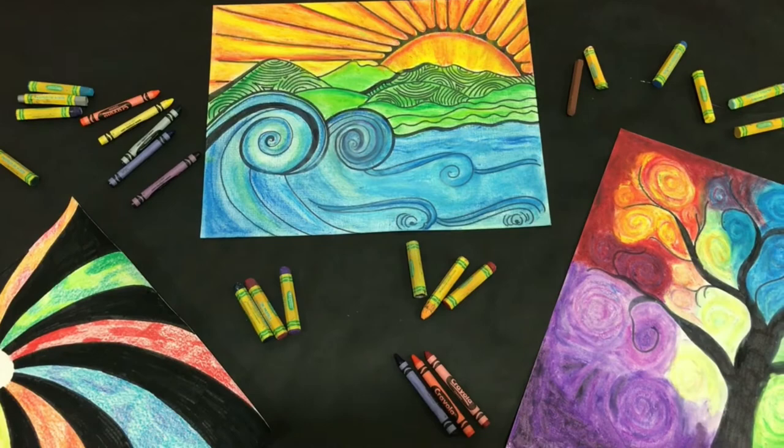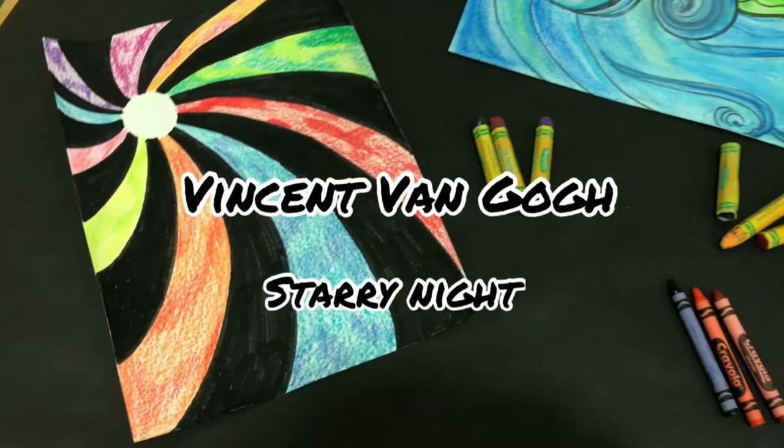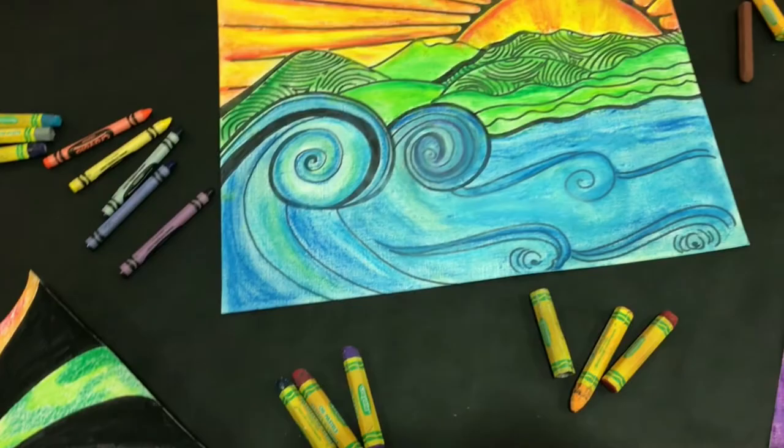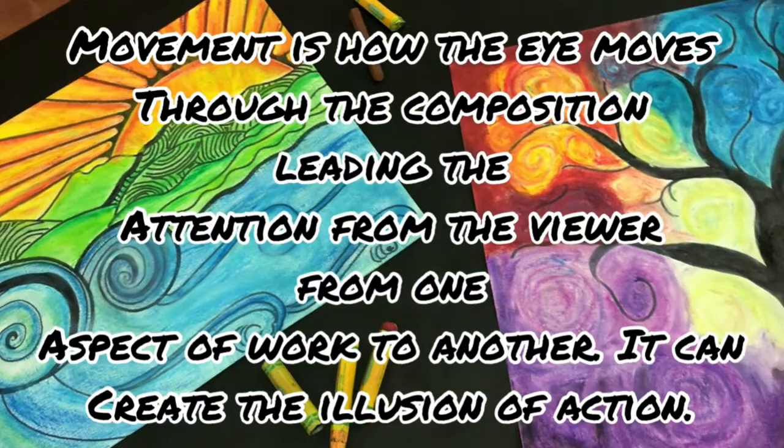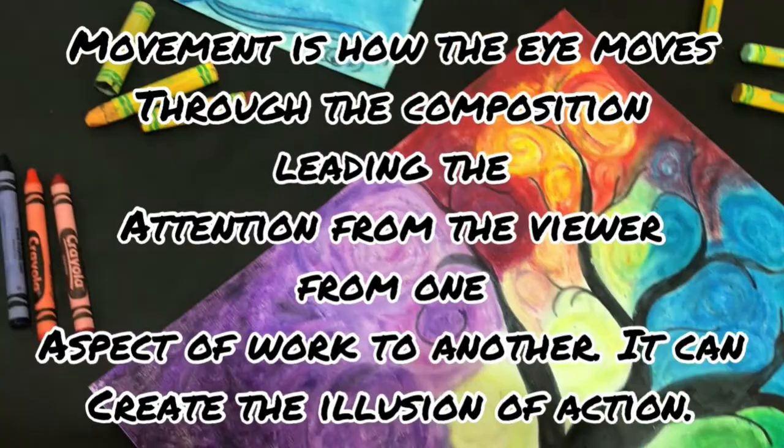Van Gogh created movement in his artwork through lines and brushstrokes. In his artwork, you will notice the wind blowing, clouds moving, the light from the sun radiating, all indicated by curvy or swirling lines. The goal of any good impressionist artist is to create feelings and to make a person feel as though they are there. Vincent Van Gogh's artwork achieved that goal.